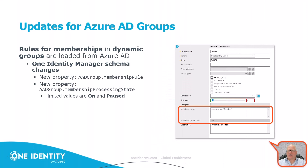Azure AD groups have further updates. It is now possible to read membership rules for dynamically assigned groups in Azure Active Directory. In the One Identity Manager schema, there is a new membership rule property, and additionally a membership processing state. You can now directly view the specific dynamic assignment rules from Azure Active Directory.